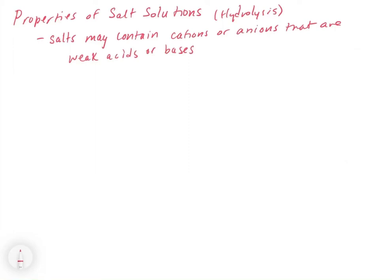In this video, we're going to take a look at the properties of salt solutions. It turns out that some salts may contain a cation or anion that is a weak acid or base in and of itself. We're going to look at some examples of this and how to figure it out.